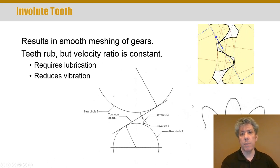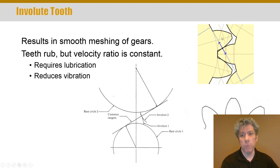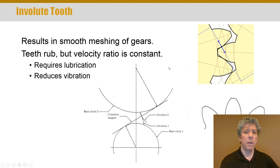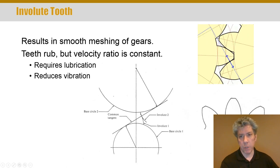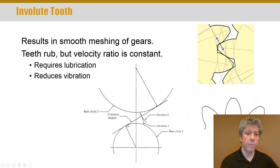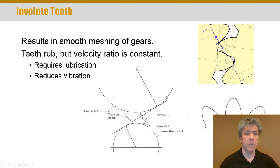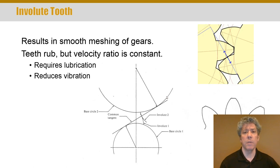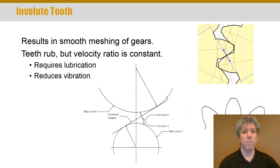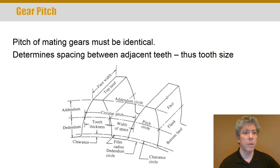You can see how the contact point is not just moving left and right — it's also moving up and down, moving along that special blue line, which means the gear ratio remains constant. The involute shape is a little bit difficult to make, and it causes some problems, but it's worth the cost.